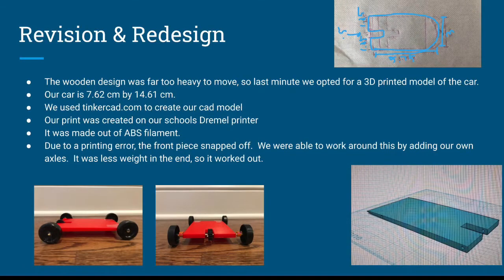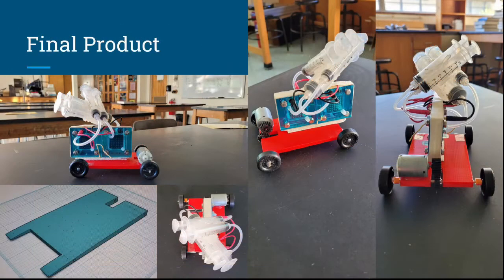Revision and redesign: the wooden design was far too heavy to move, so last minute we opted for a 3D printed model. Our car is 7.62 cm x 14.61 cm in the new design. We used the application Tinkercad.com to create our CAD model. Our print was created on our school's Dremel printer and was made out of red ABS filament. Due to a printing error, the front piece snapped off, which ended up being less weight, so we made it work by adding the axle to the front. Here is our final product — you can see our CAD model and how our car actually turned out with the hydrogen fuel cell, motor, and gears attached.